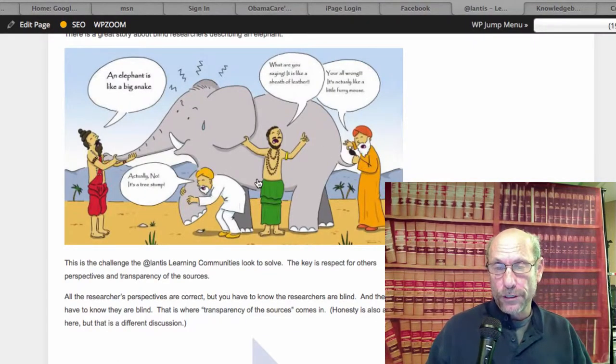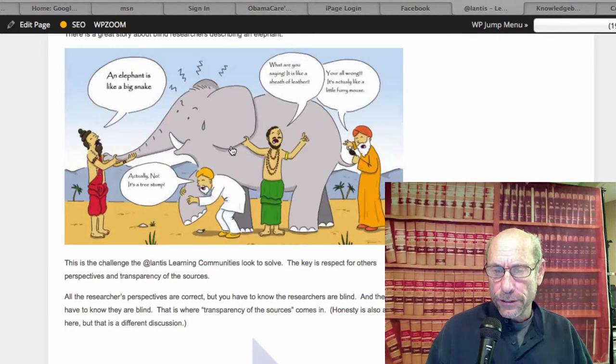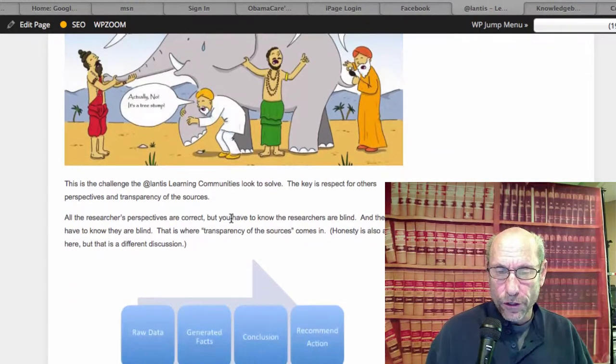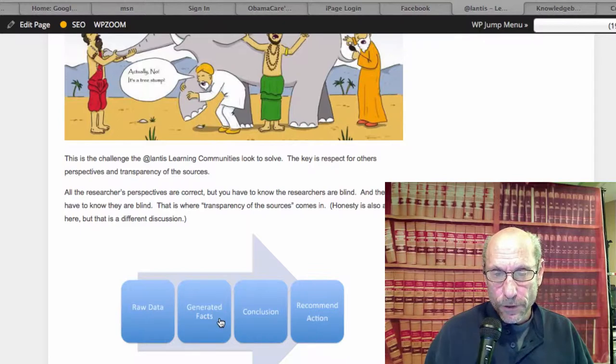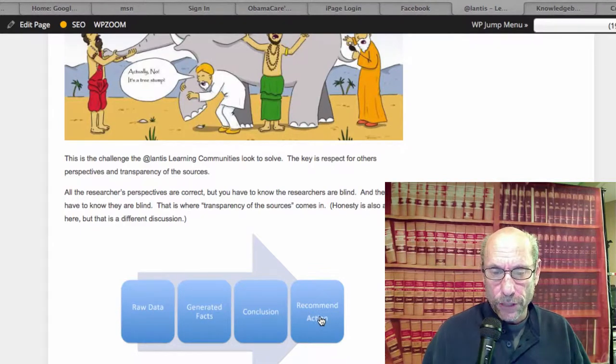When you look at the blind men and the elephant, the action may be to move this thing. But we know we're all blind, so we need to work together to find out what this thing is so that we can move it. So you have raw data, generated facts, conclusions, and recommended actions.